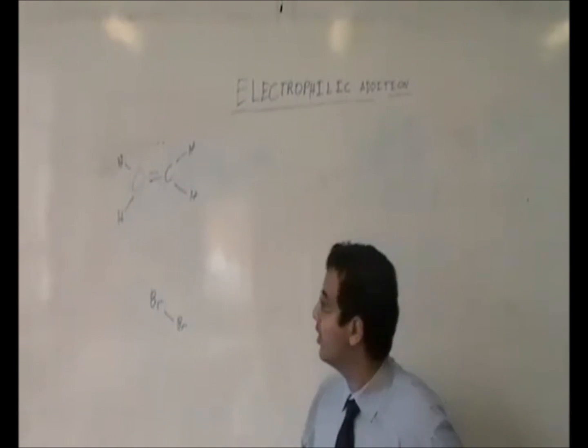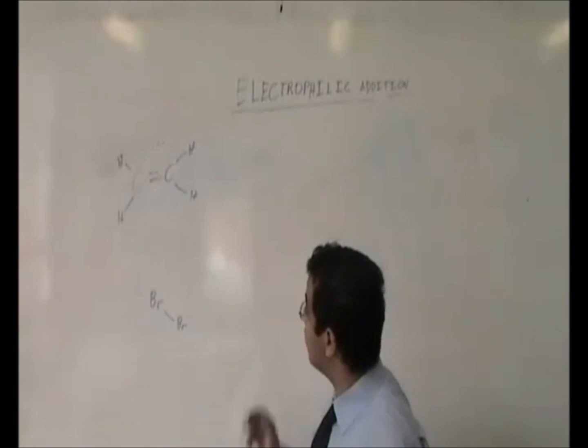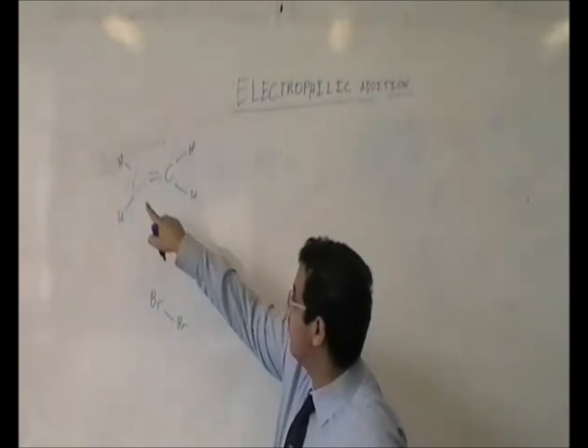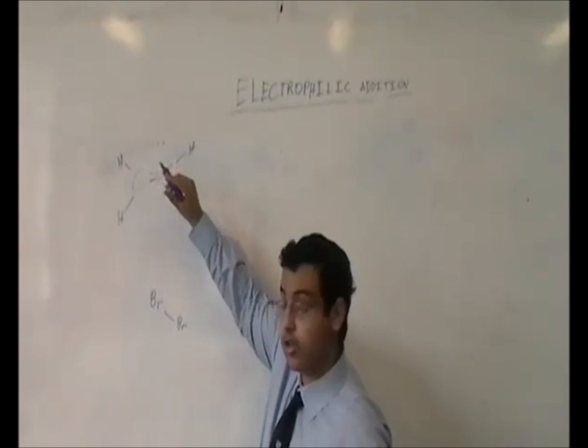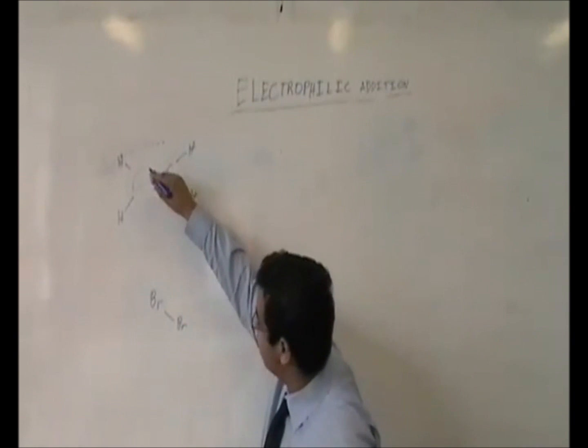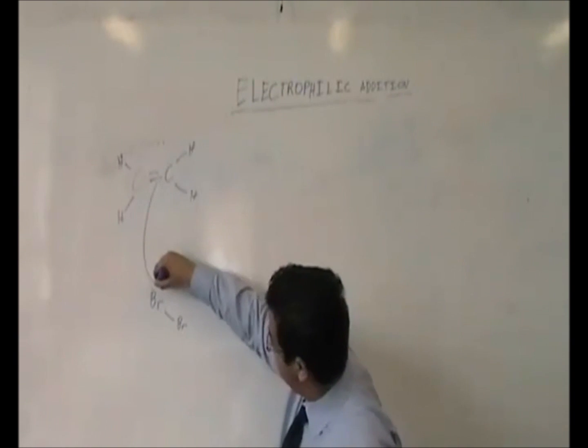Now to get on with the tutorial. What happens in Electrophilic Addition is that a pair of electrons moves from this carbon-carbon double bond because one of the bonds breaks. So a pair of electrons move to this bromine.